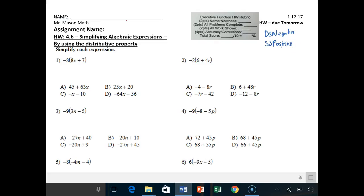Number 1, negative 8 times 8 is negative 64x plus negative 8 times 7 is negative 56. Right away you're saying that's not in the answer choices. Yes it is, it's right there. You just got to do plus a negative, right?